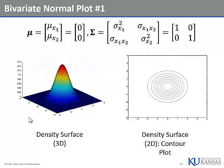For this example I chose: mean for X1 = 0, mean for X2 = 0, variance for X1 = 1, variance for X2 = 1, covariance = 0. Zero covariance means zero correlation. That covariance matrix looks like an identity matrix, and the mean vector looks like a zero vector.